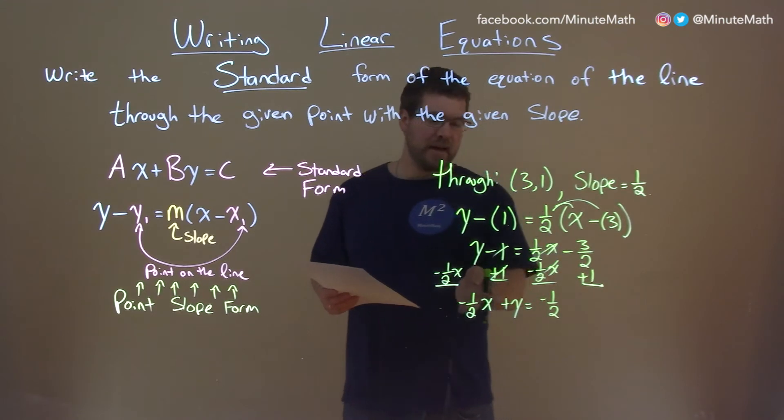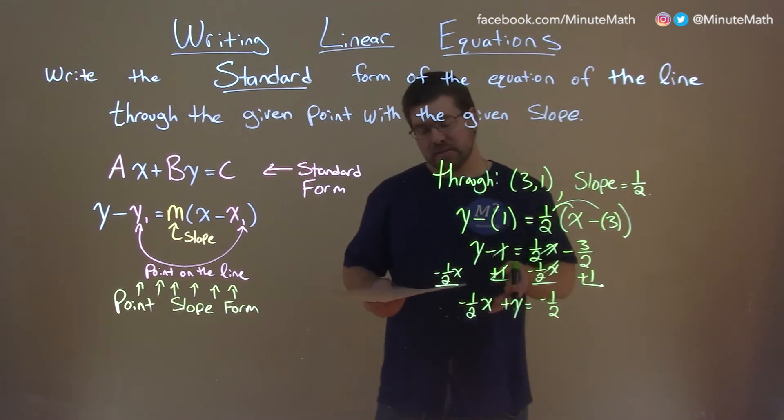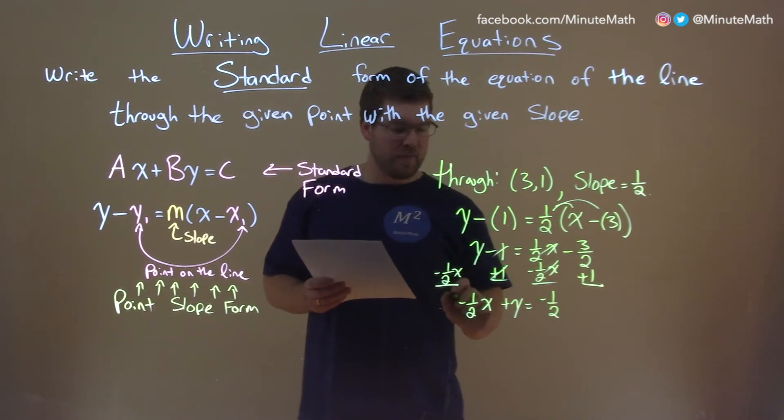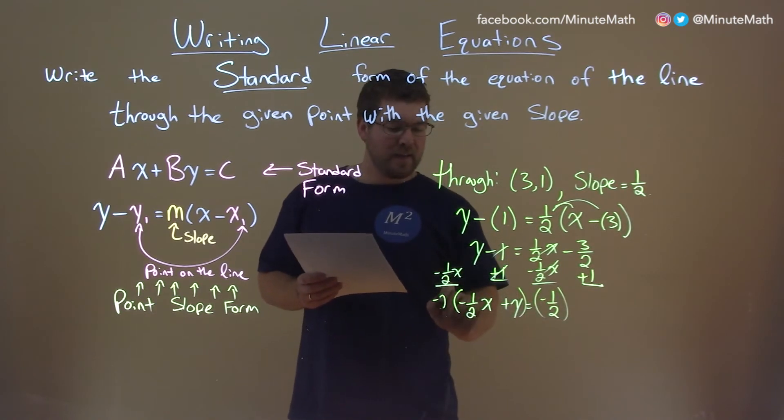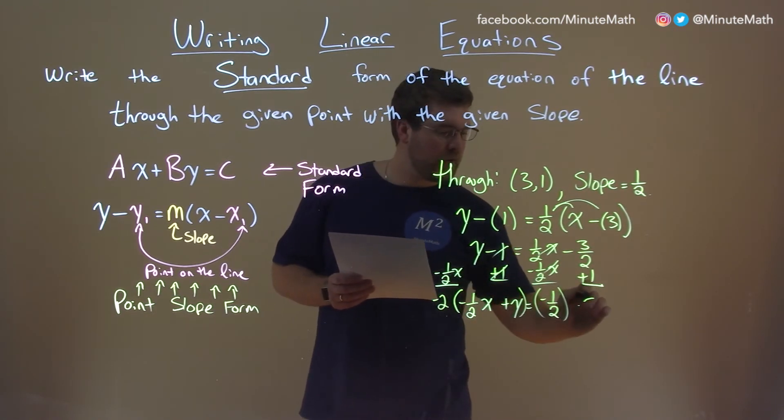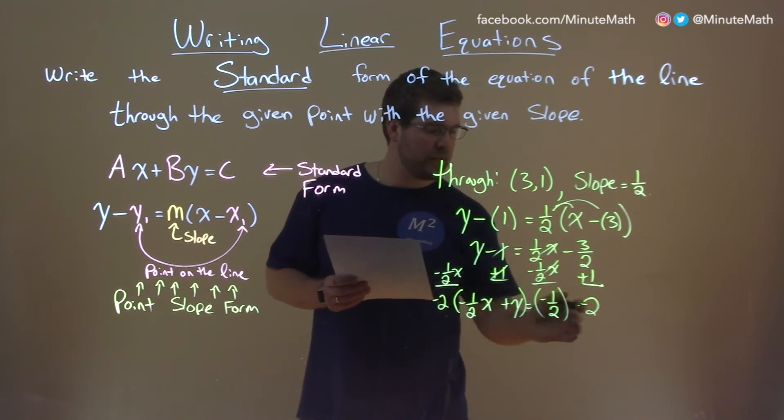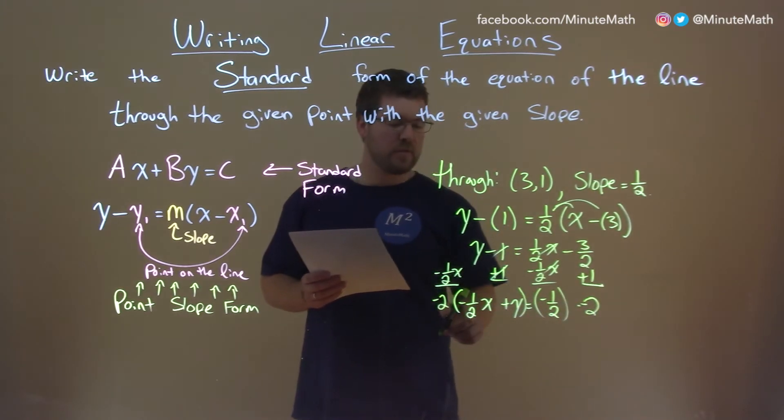Well, I don't like necessarily having values that are fractions, so I'm going to get rid of that fraction by multiplying both sides by -2. The reason why I chose -2: I saw -1/2 here, and I knew when I multiplied them out, I'd get a positive 1.